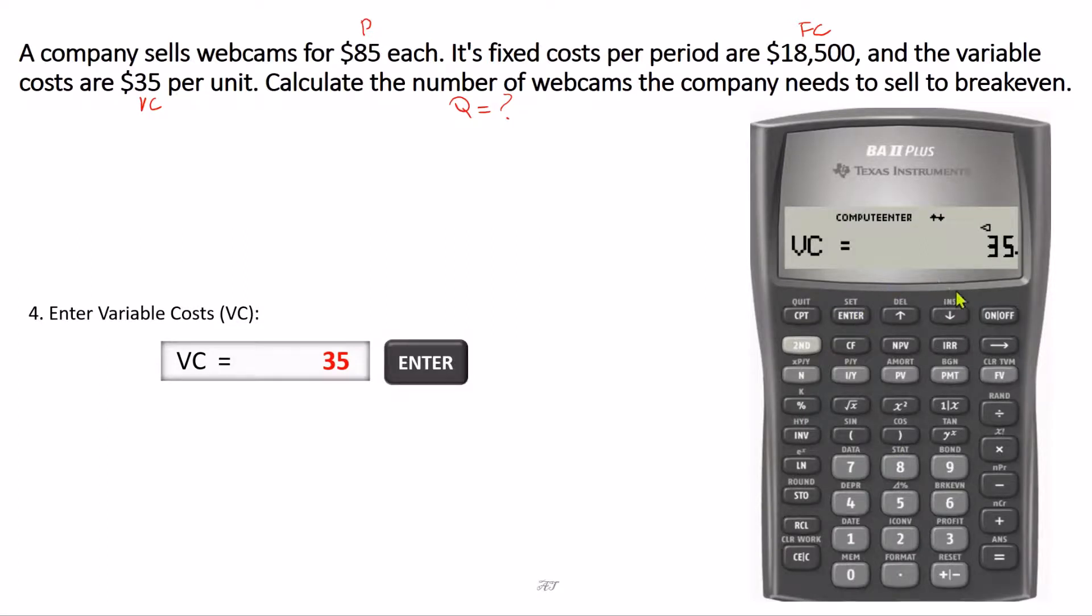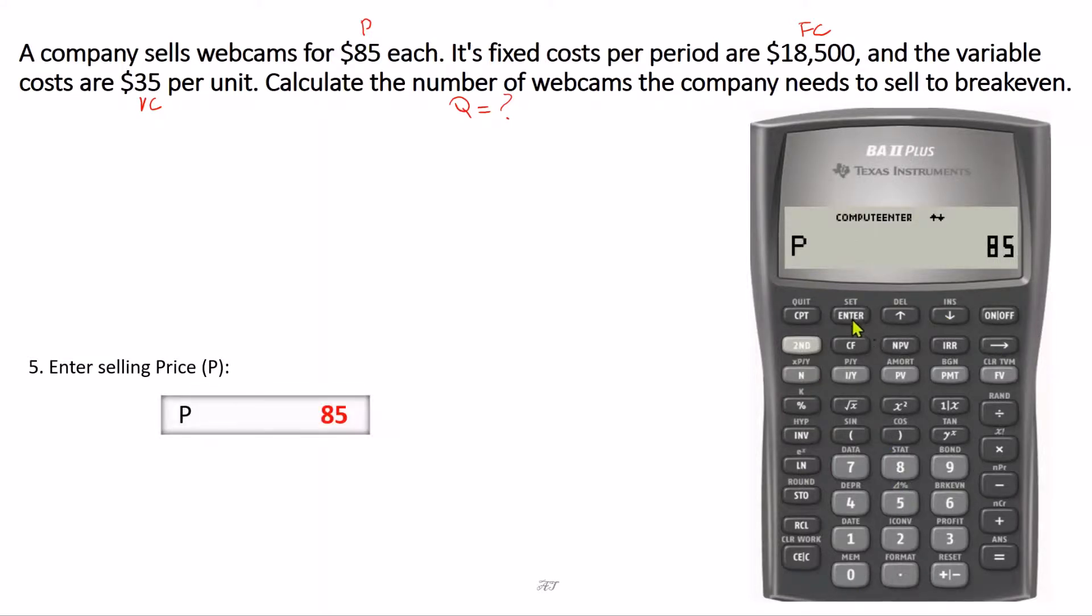Again, we use the down arrow key to go to the next variable, which is P or selling price. The selling price per unit is $85. So 85, and we press enter.